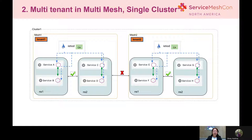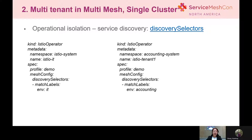So we went further to think about whether we can support multi-tenancy in a single cluster but with multiple meshes. In this picture, you can see there are two tenants, tenant1 and tenant2. Both of them have their own mesh, but they are running in the same cluster. Because every mesh has their own root CA, traffic between them will be isolated. Also in Istio, there is a discovery selector that you can use to achieve service discovery isolation for multi-mesh in a single cluster. When you install Istio, you can specify which namespace IstioD should watch — for example, only namespaces with the label 'environment equals IT'.